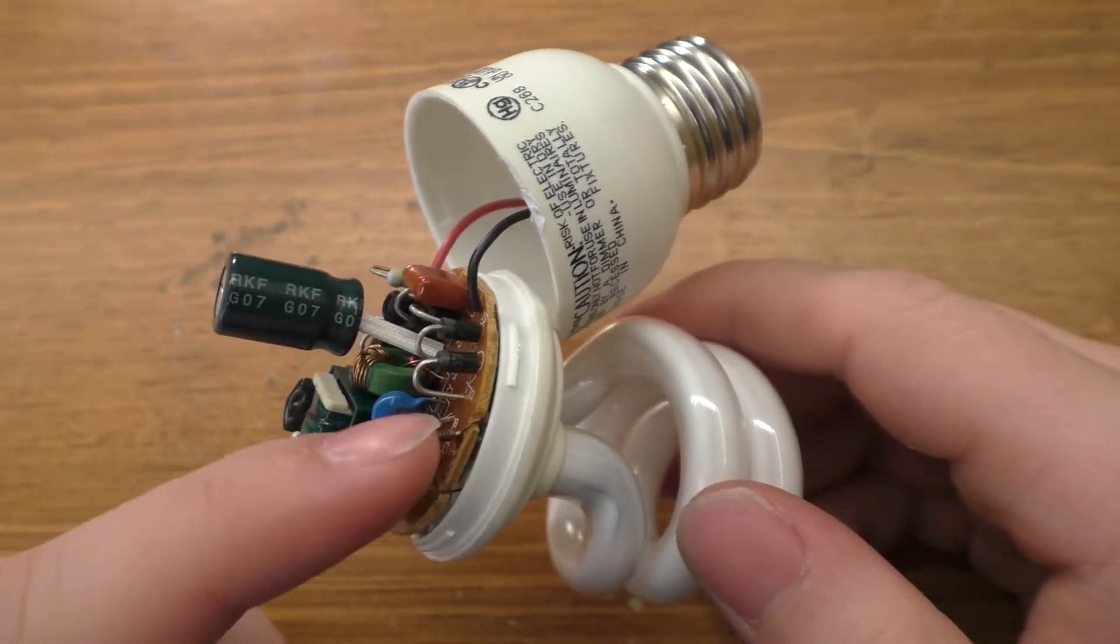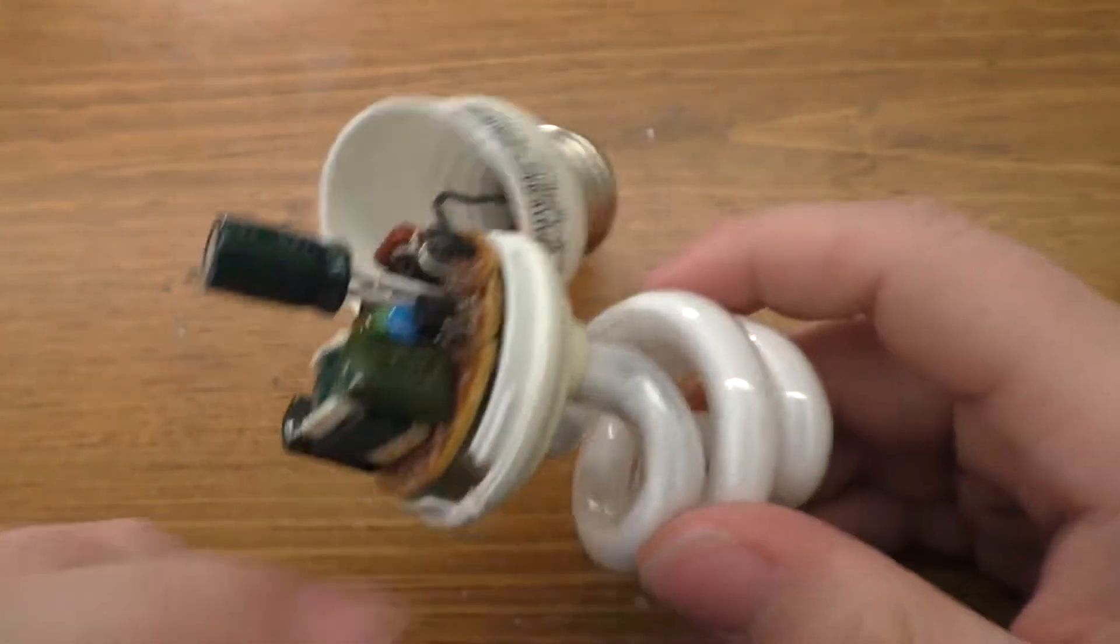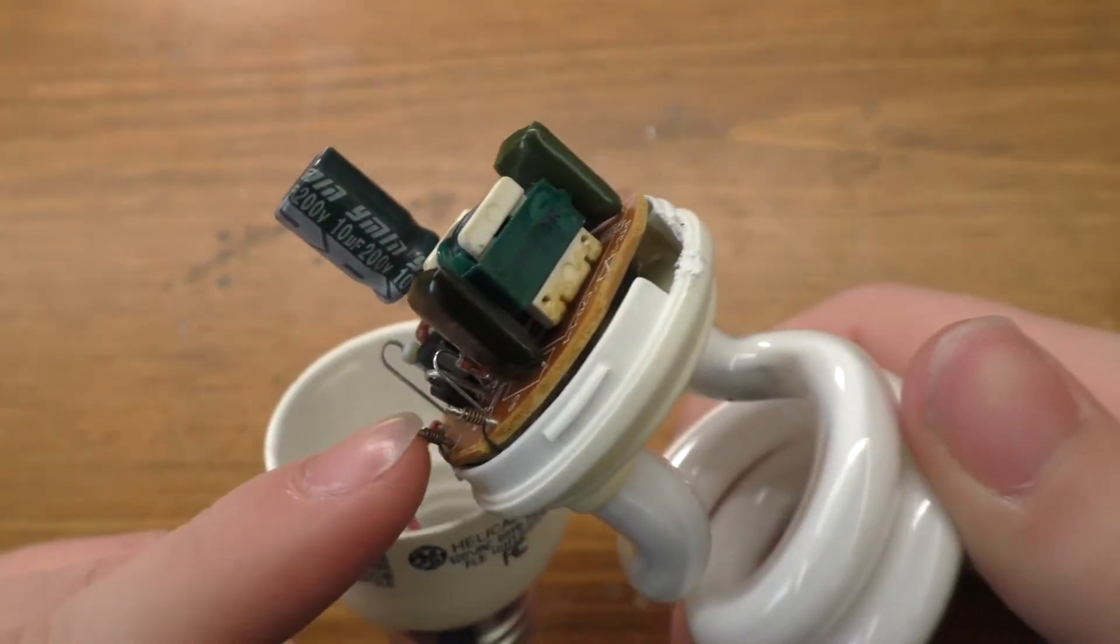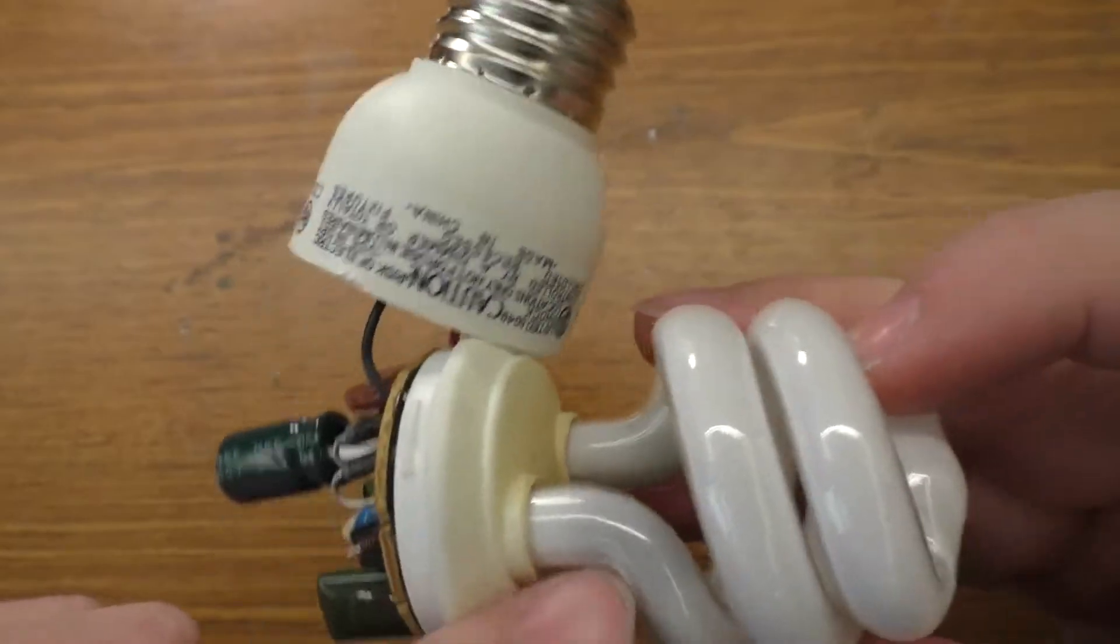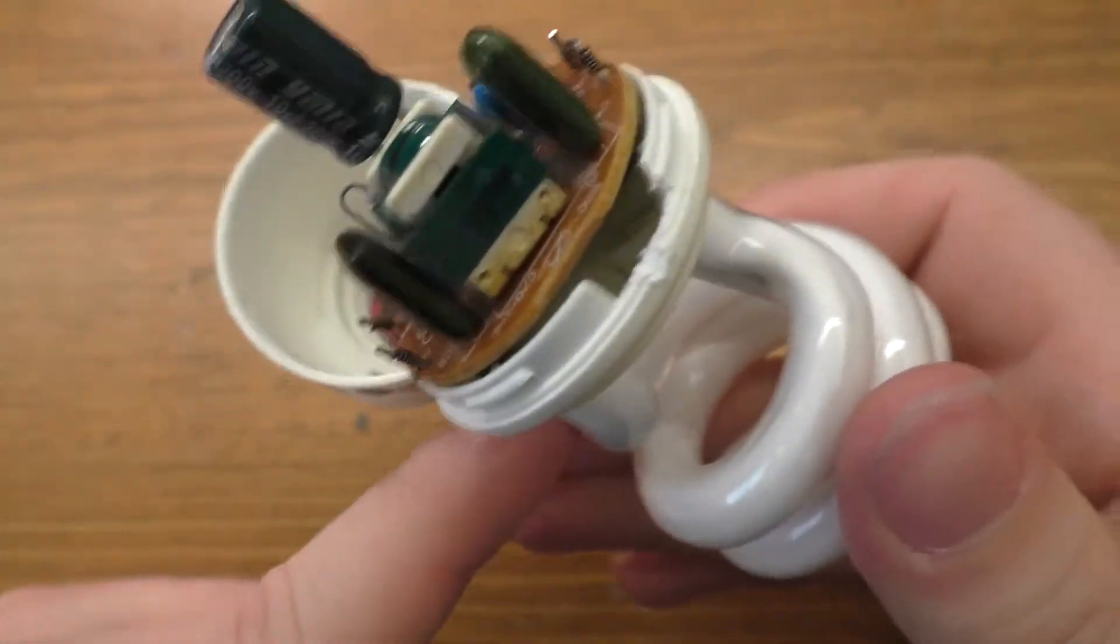So this would be like one of the filaments for the bulb and then the other one would be on this side. So yeah, nothing too special there.